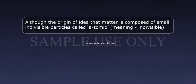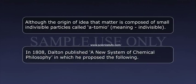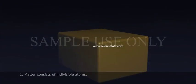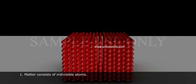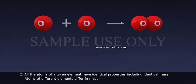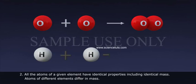Dalton's Atomic Theory. Although the origin of idea that matter is composed of small indivisible particles called atoms, meaning indivisible, in 1808, Dalton published a new system of chemical philosophy in which he proposed the following. 1. Matter consists of indivisible atoms. 2. All the atoms of a given element have identical properties, including identical mass.